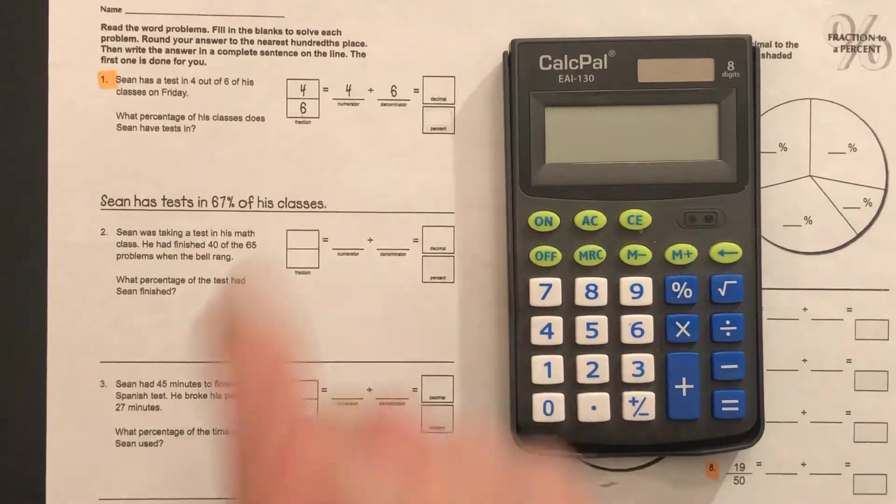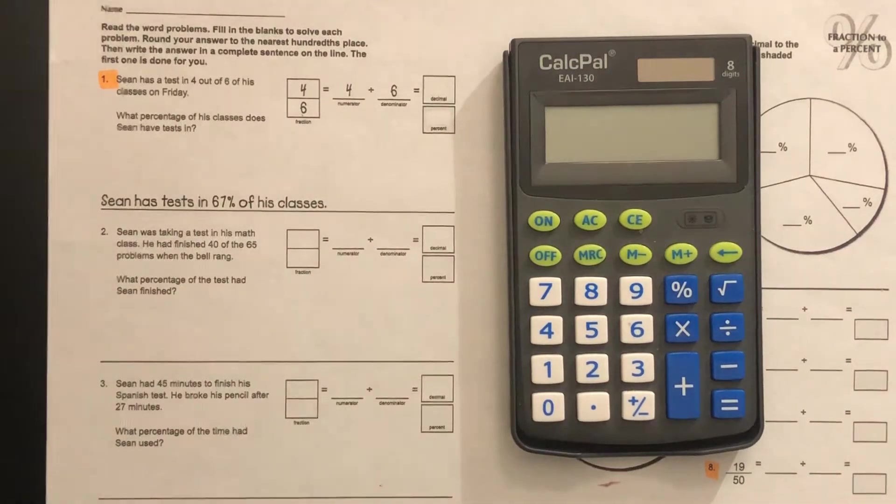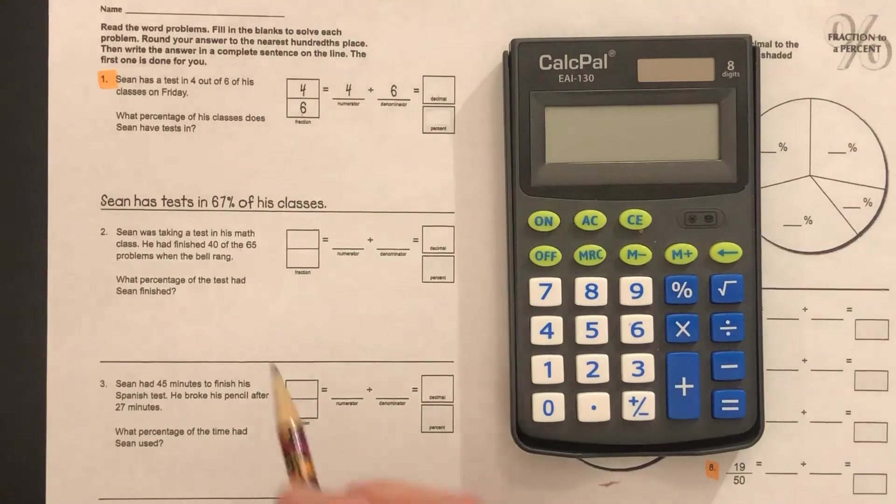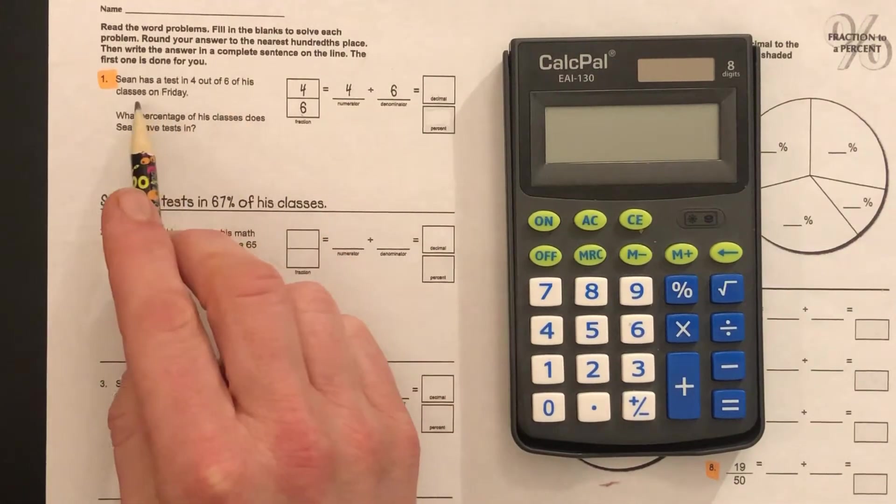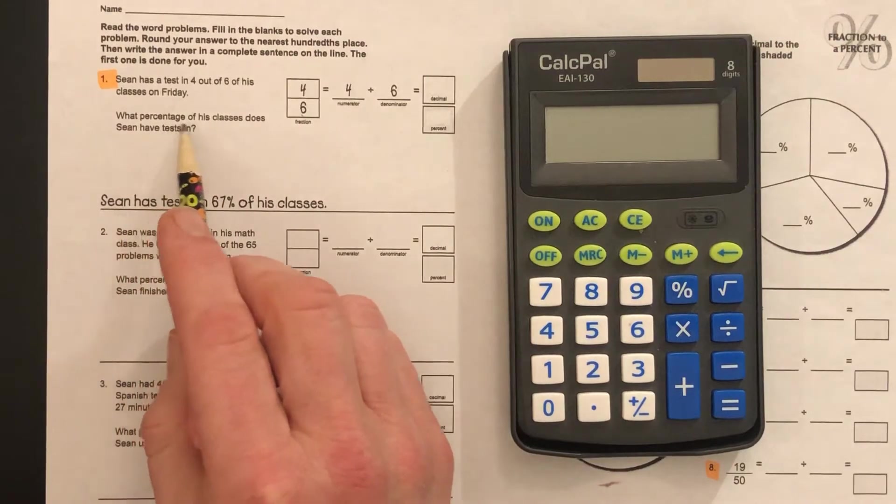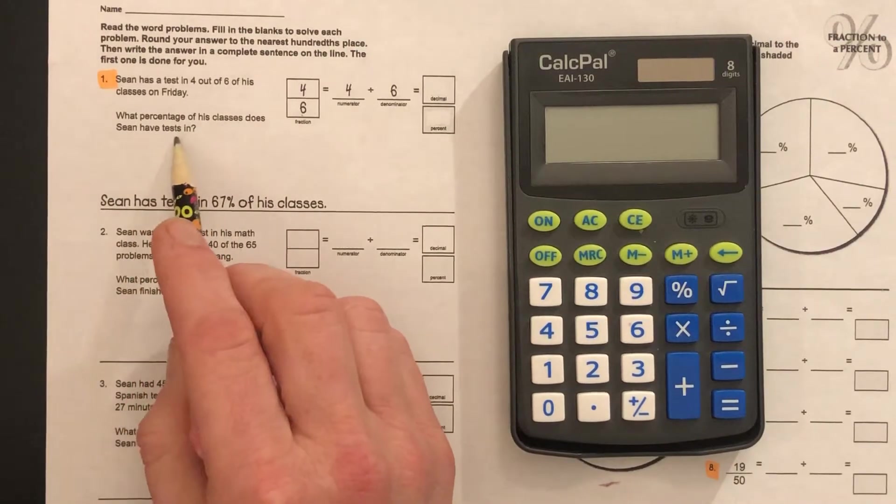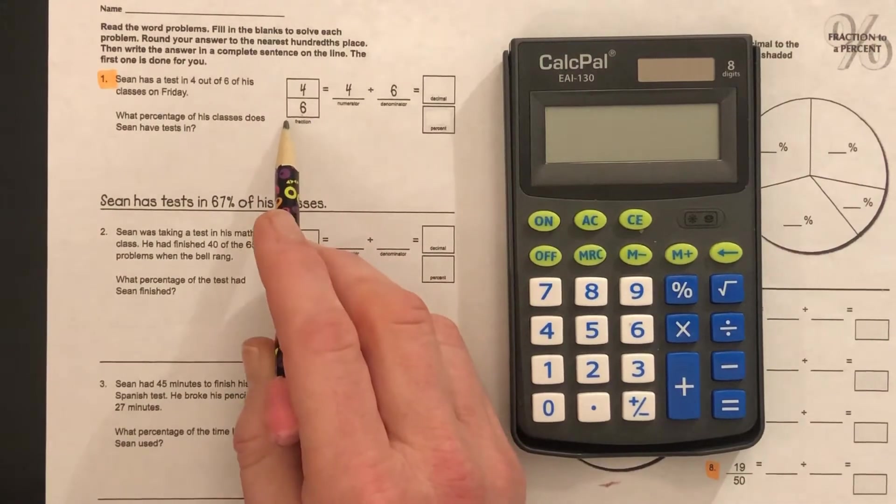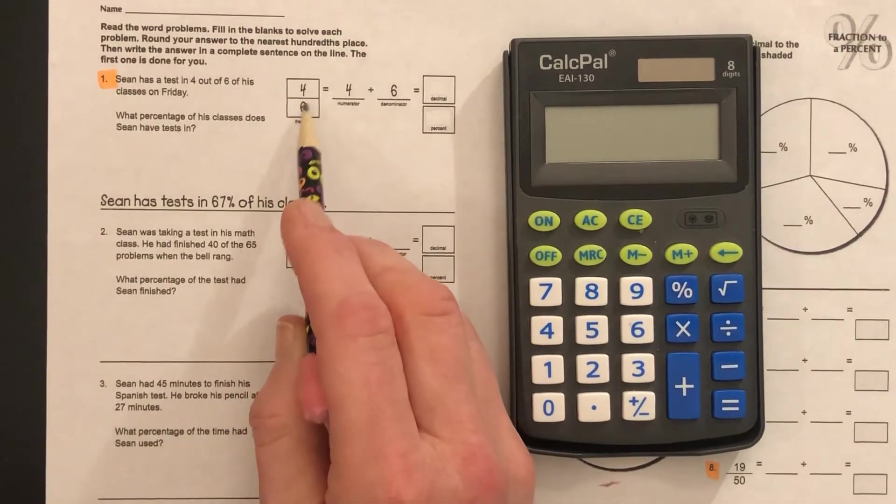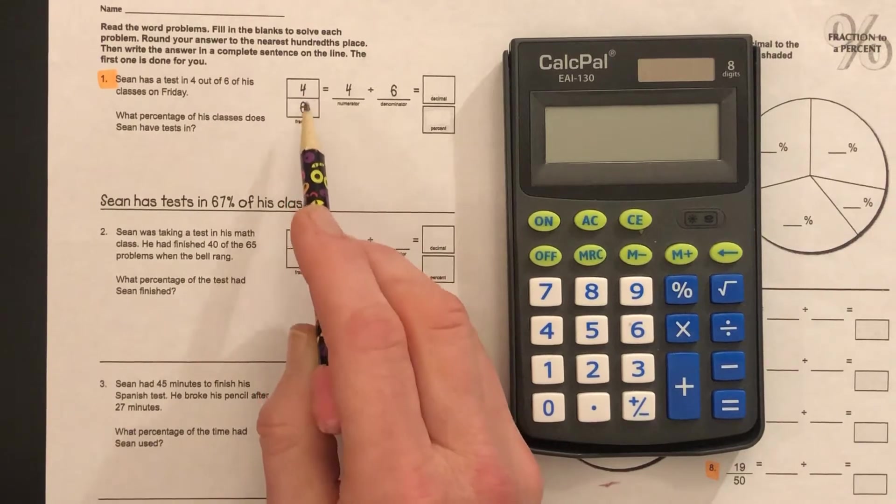Sean has a test in four out of six of his classes on Friday. What percentage of his classes does Sean have tests in? Four out of six. You write it as a fraction, and then it's also division, right? Four over six. Four divided by six.